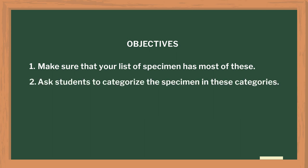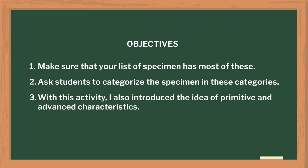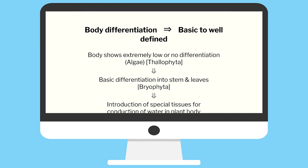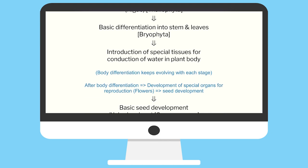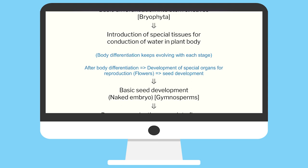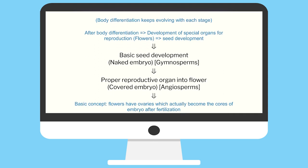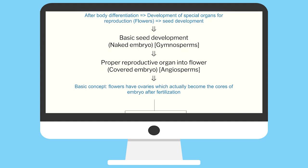Ask students to categorize the specimens into these categories. With this activity, I also introduced the idea of primitive and advanced characteristics, some of which were quite intuitive. Once this is done, students were asked to prepare a flowchart of the characteristics observed from primitive to advanced. A sample flowchart is shown on the screen. We also discussed which characteristics came first and how they evolved.